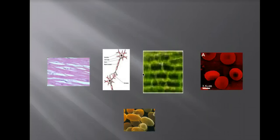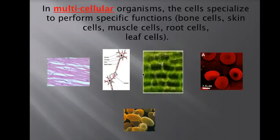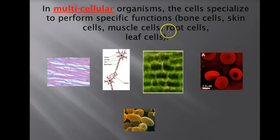Then you have some items like humans, plants, and some animals that are what we call multicellular. In multicellular organisms, those organisms have specific cells to do specific jobs. So you'll have bone cells, skin cells, muscle cells, root cells — each cell in a multicellular organism will have a specific job.